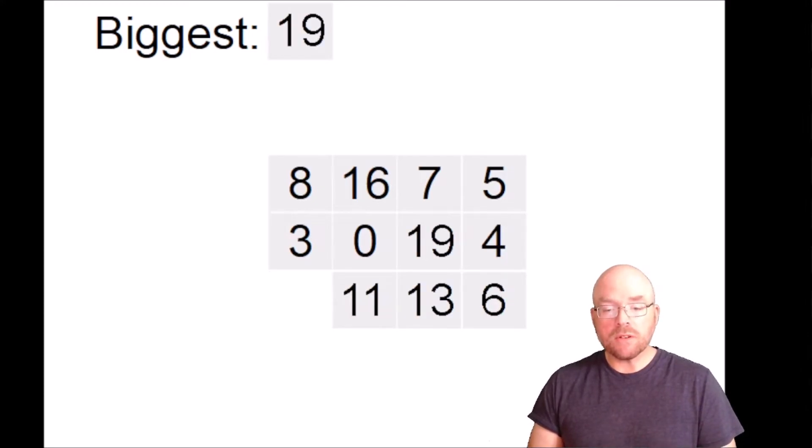Let's move to the third row. Start off with the first value, two. Is that bigger than what's in biggest? No. You can see at this point that we're not going to find anything bigger than biggest. But this is how the algorithm is going to work. Is 11 bigger than biggest? No. What about 13? Nope. What about six? Nope. Once we've gone through every value in each row, we're guaranteed with this approach to have the biggest value.